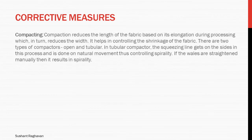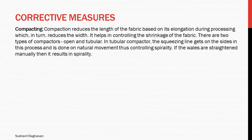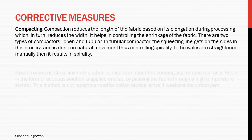Corrective measures include compaction, which reduces the length of the fabric based on its elongation during processing, in turn reducing the width and helping control shrinkage. There are two types of compactors: open and tubular. In a tubular compactor, the skewing line is controlled on the sides through natural movement, thus controlling spirality. If the wales are straightened manually, it results in correction of spirality.